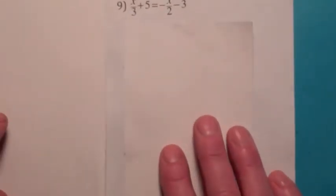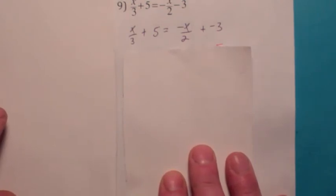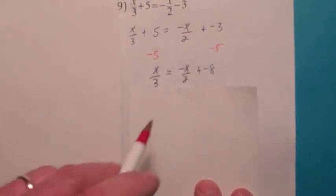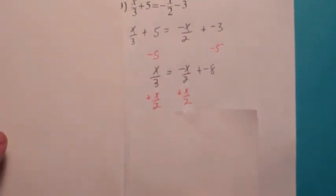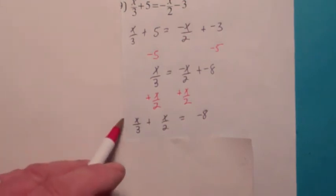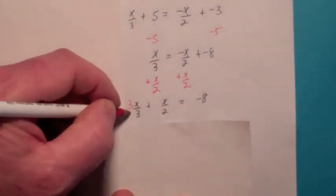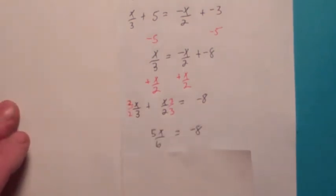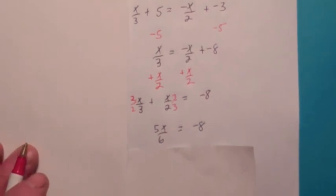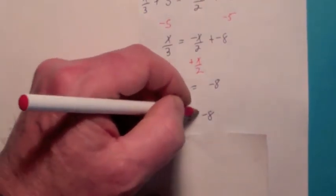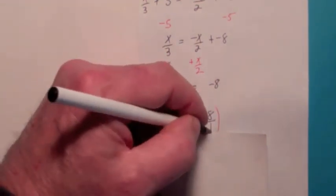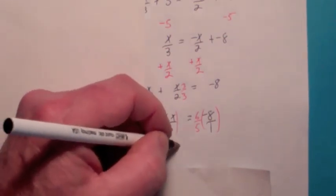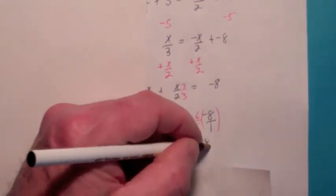On this next practice problem, let's change to additive form. Get the x's on the left, numbers on the right. Add negative 5 to both sides to get rid of the 5. Then add positive x over 2 to both sides to move the x's. Before we can combine those we need the LCD, which is 6 — multiply by 2 over 2 and 3 over 3 respectively. We get 2x over 6 plus 3x over 6, giving 5x over 6 equals negative 8. At the very end, multiply by the reciprocal: 6 over 5. Nothing cancels on the right, so x equals negative 48 over 5.